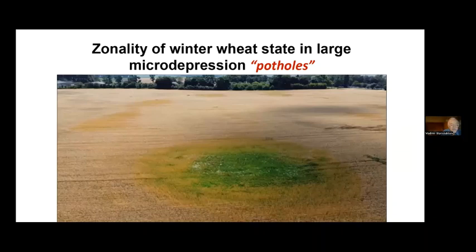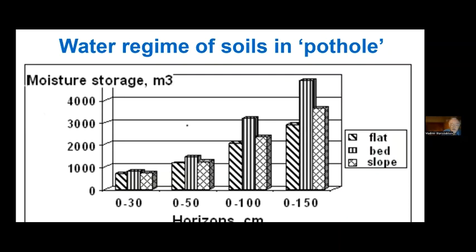After four weeks, plants have died entirely. The same picture of wheat plants' developmental zonality can be seen on neighboring fields. We studied the entire field according to soil and water regime heterogeneity. You can see differences in soil moisture content in the layer from 30 cm to 150 cm at the bottom of the micro-depression, on the slope, and on the flat area.